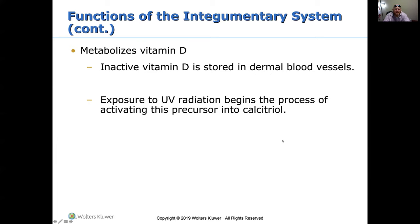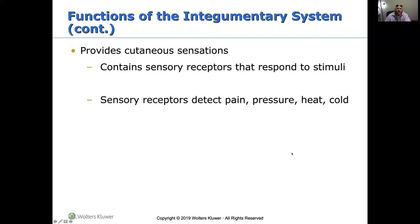The skin metabolizes vitamin D. A lot of times vitamin D is inactive in blood vessels found in the dermis, and exposure to UV radiation starts the process of activating this precursor. The skin also provides cutaneous sensation — sensory receptors respond to pain, pressure, heat, and cold. It tells you, for example, that your hand is on a hot stove and to move it.